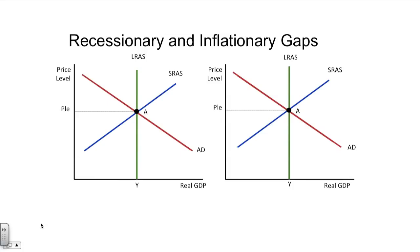For today's video, we are going to take a look at the long-run aggregate supply and aggregate demand model. What we're looking at in this slide is the long-run aggregate supply and aggregate demand model in equilibrium. What I've chosen to do here is to give you an opportunity to look at two very common scenarios with respect to this model. The scenarios include a recessionary condition and an inflationary condition, which will create what are called recessionary and inflationary gaps.